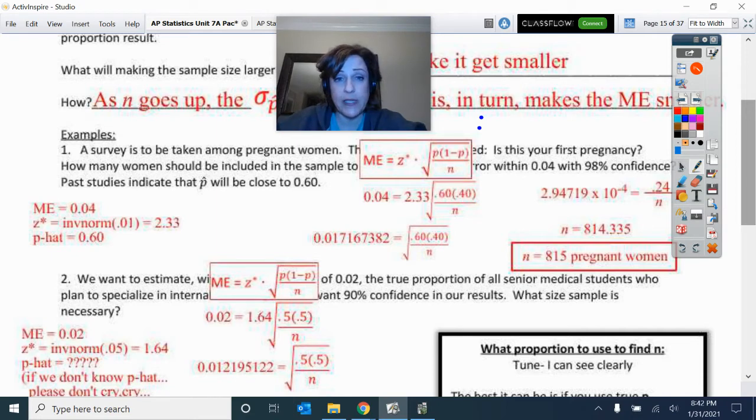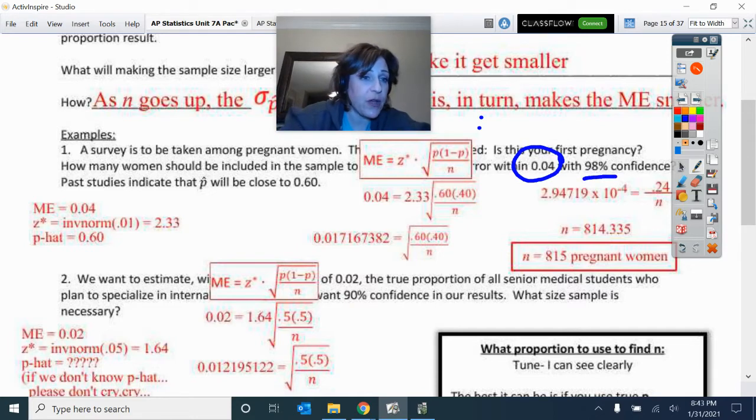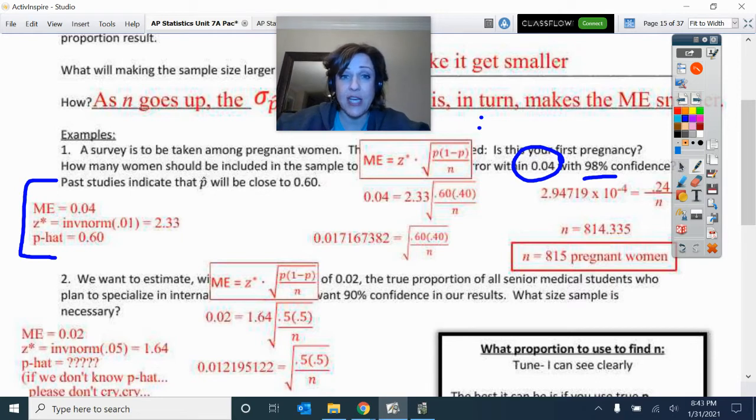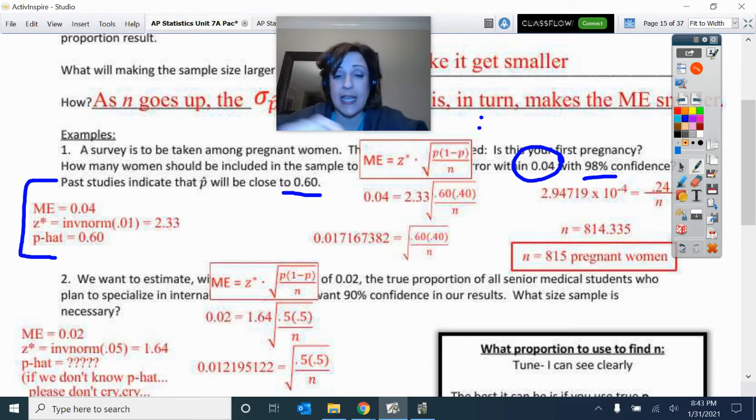This first one is like what we saw on our assignment for assignment two. We are asked to have a margin of error of 0.04 with 98% confidence. So I came over here and I kind of wrote out the facts that I know. The margin of error is 0.04. That critical value for 98% confidence is that 2.33. The P hat they told me based on past results indicates 0.6. So here is the key that you have to know to do, is to fill in this formula: margin of error equals that critical value times that standard deviation of the statistic.